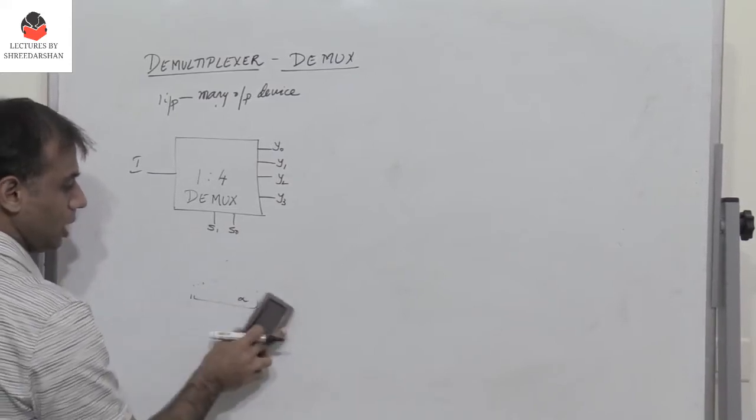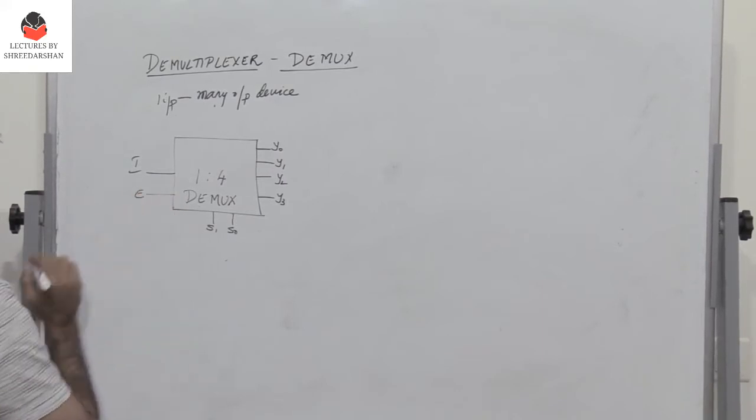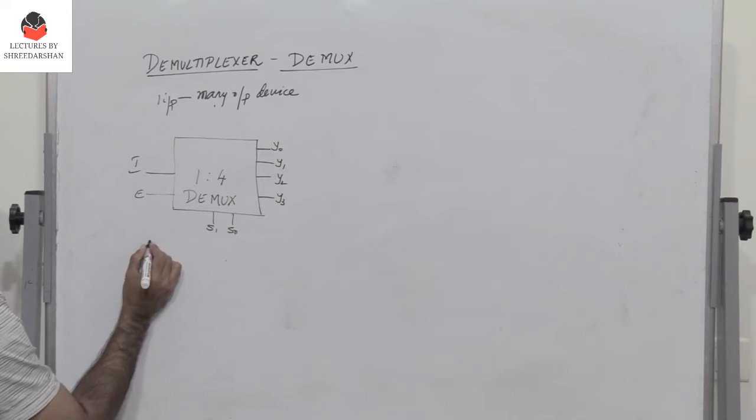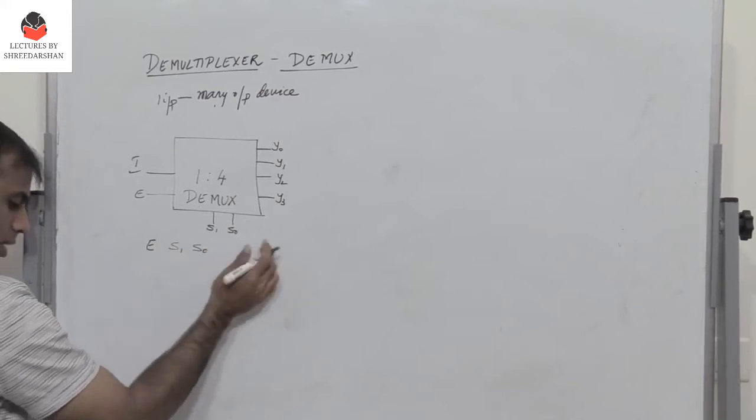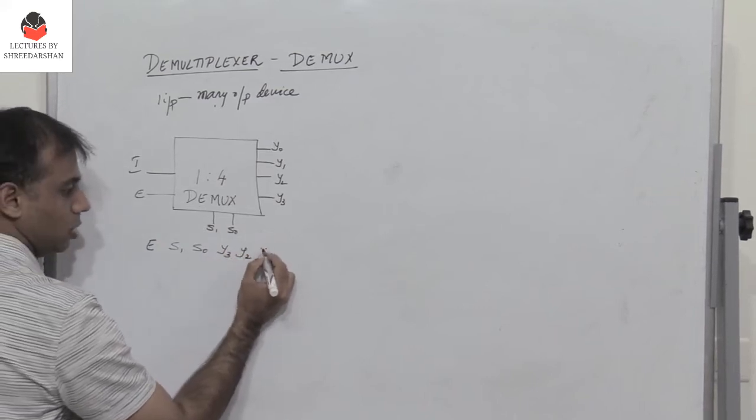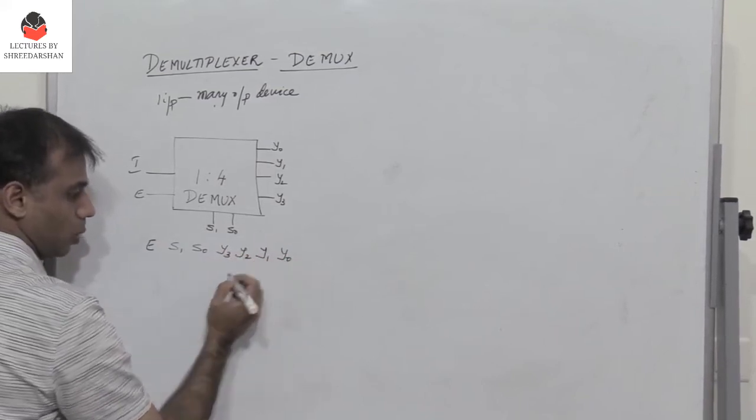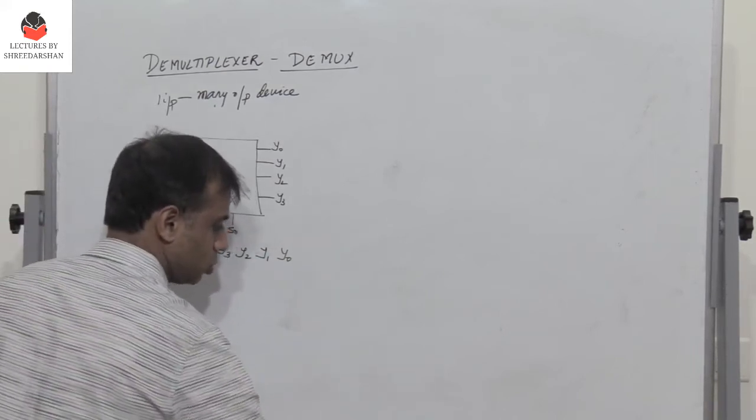And also we can include an enable. So I have e which is the enable. So now can I write the truth table? Yes. So I have enable s1, s0 and then again I have the 4 outputs y3, y2, y1 and y0.